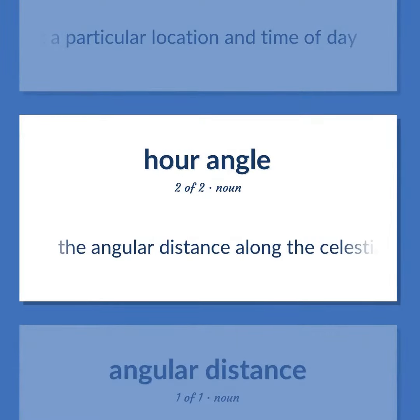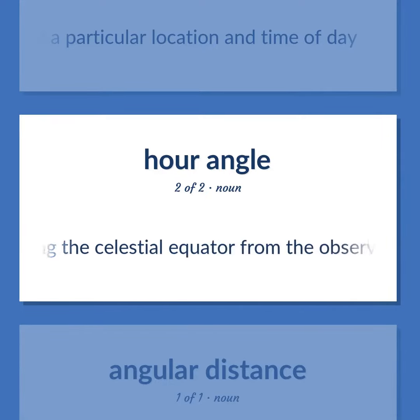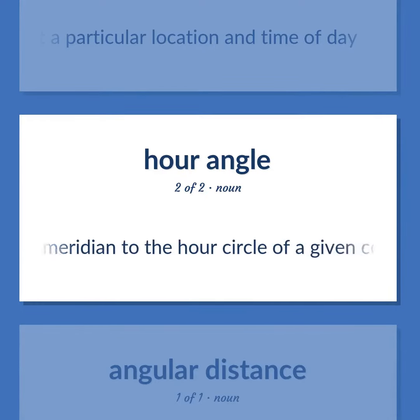The angular distance along the celestial equator from the observer's meridian to the hour circle of a given celestial body.